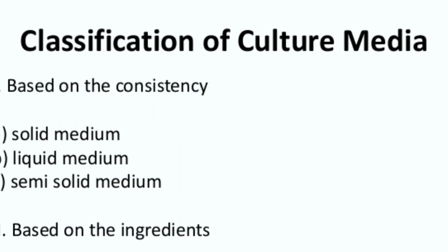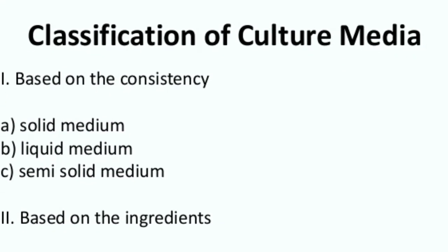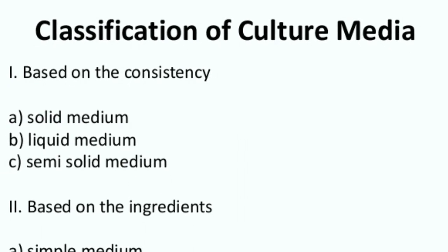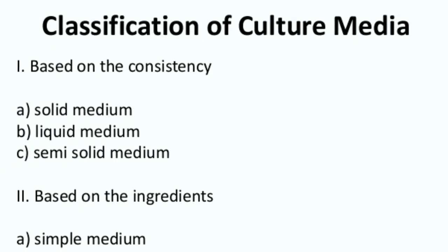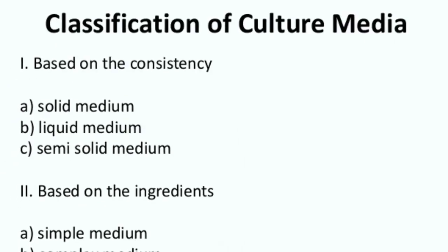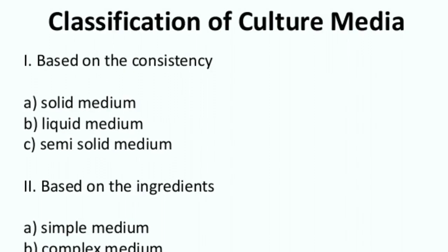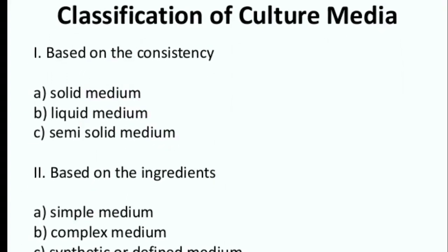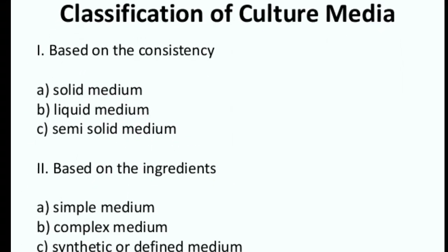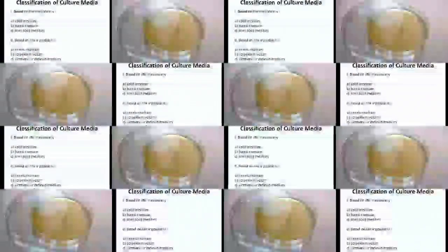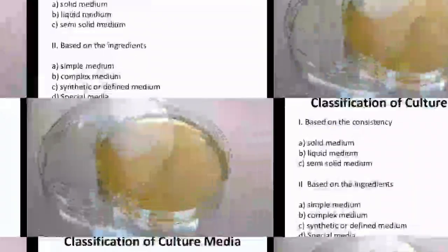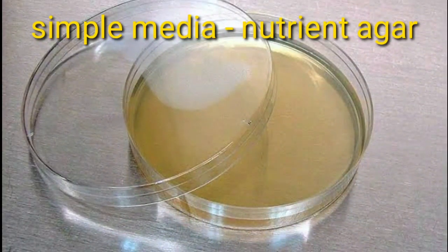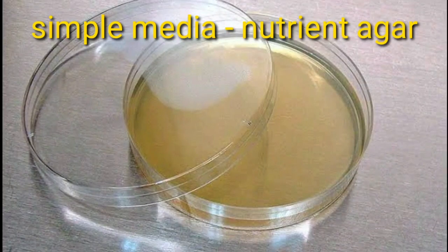Culture media can be classified on the basis of physical nature — those are liquid, semi-solid, and solid. The next basis is chemical composition — synthetic and complex. The third classification is functional type — supportive, enriched, selective, and differential.